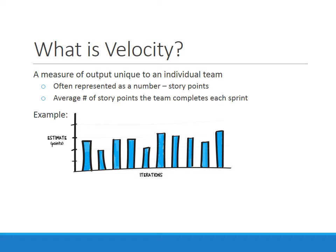In order to predict what the team might be able to accomplish the next sprint, you would either take the average of these, or you might look over the last couple of iterations and see where the team has been trending, and that'll give you an idea of what you might be able to commit to and accomplish the next sprint.